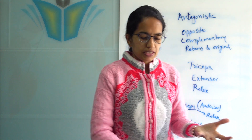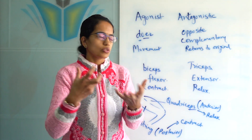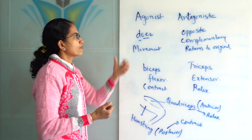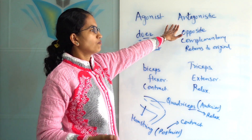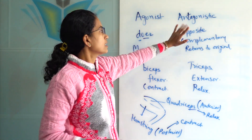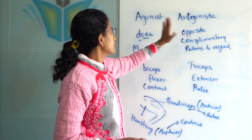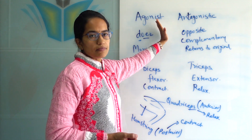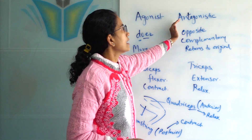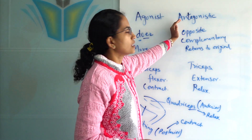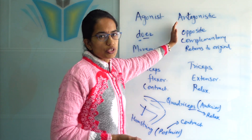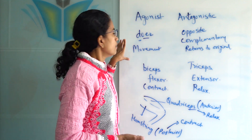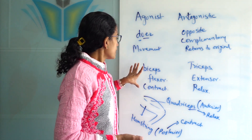Antagonistic muscles usually work in the opposite direction. They help in movement and they work in pairs. They do what is opposite to what is done by the agonist muscle, and they help return the limb to its original position. The agonist is the doer muscle which does the movement.